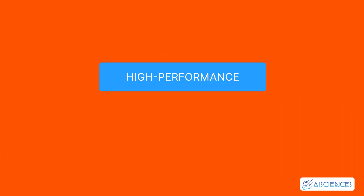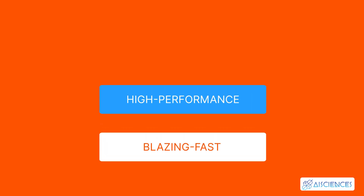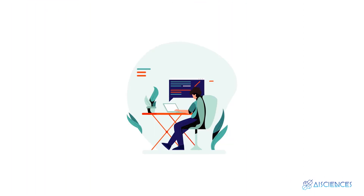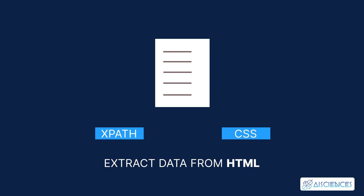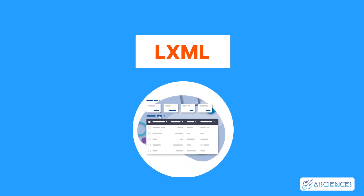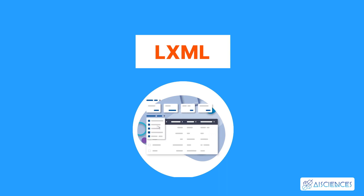Number 4: LXML. The high-performance, blazing-fast LXML library combines the simplicity of Python with the power of element trees. This lightweight library uses XPath and CSS selectors to extract data from HTML, and is easy to use for processing HTML and XML in Python. LXML is especially useful for scraping data from frequently changing web pages, such as stock market websites that provide real-time stock prices.